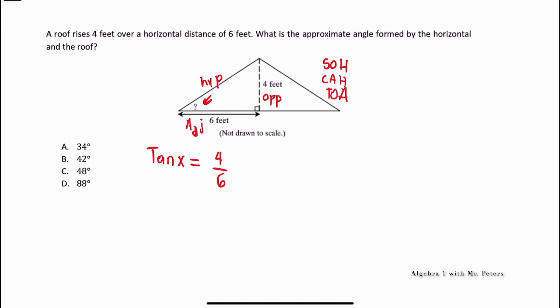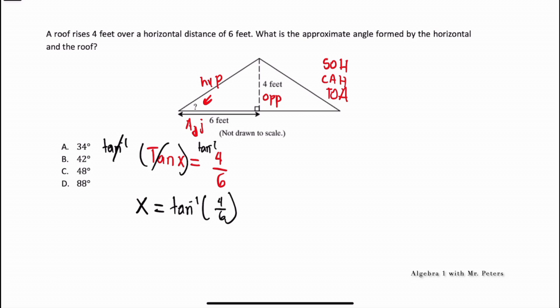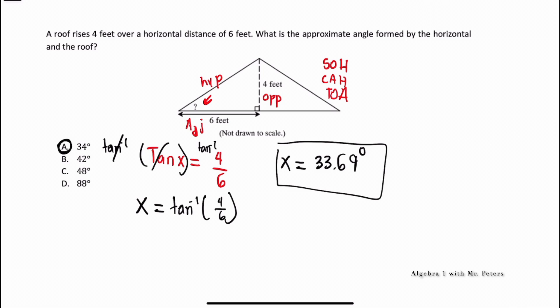The reason students get these problems wrong is they think to isolate X you divide by tan — we're not going to do that. To properly solve this, we take the inverse of tan on both sides. Those tans cancel, leaving X = arctan(4/6). Punching this into the calculator — 4 divided by 6, then second tan — we get X ≈ 33.69 degrees. The closest answer choice is A, which is 34 degrees.